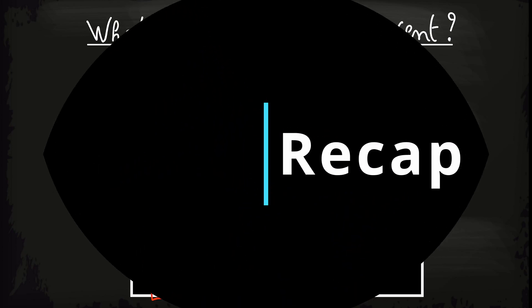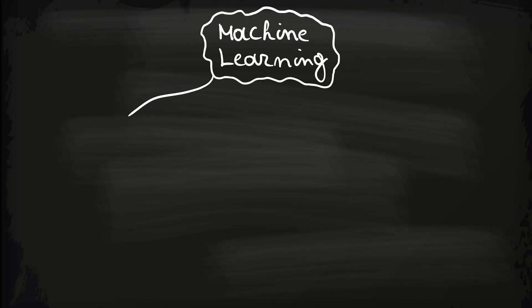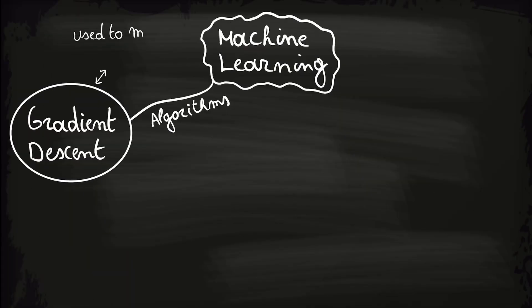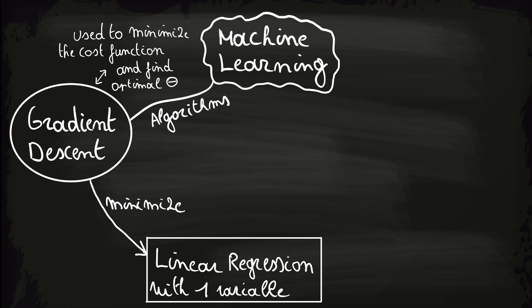But first let's recap what we are doing. In this video, we will learn one of the most useful algorithms in machine learning. We will look into gradient descent and how we can use it to minimize cost functions and find the optimal values for theta. We will start by using gradient descent to minimize linear regression problems with one variable. But in fact, gradient descent is a general algorithm and can be used to minimize almost every cost function in machine learning.